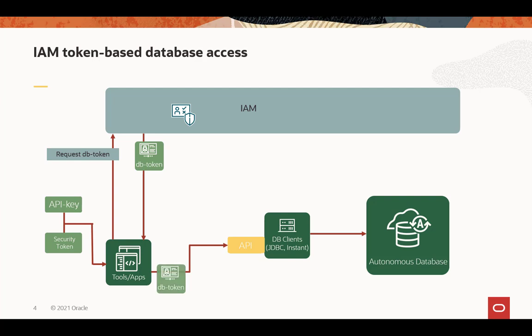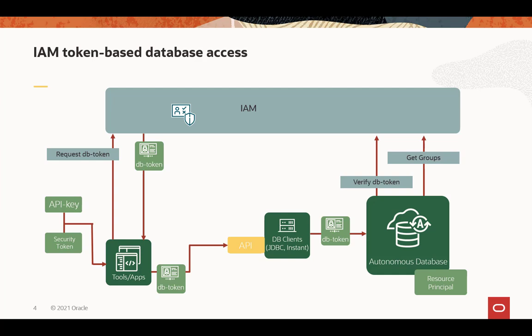The DB token is retrieved and passed to the database client through a new attribute in the API, which will then send it to the Autonomous Database. The Autonomous Database will verify the DB token, make sure that it was sent by IAM using the Resource Principal. Once the DB token is verified, it will get the group information and apply the same schema mapping as in the prior process, because the IAM user still has to land in a schema to complete authorization.